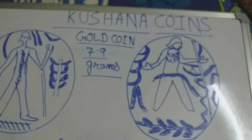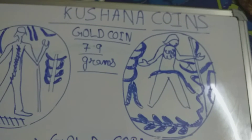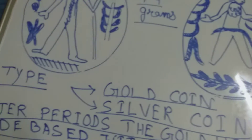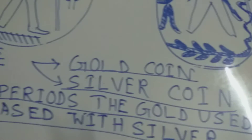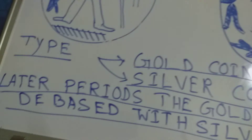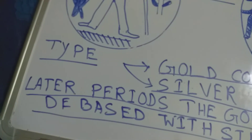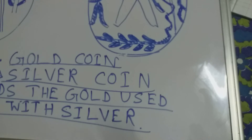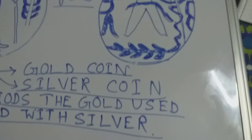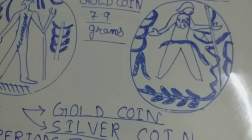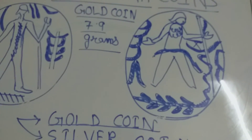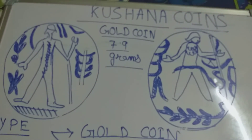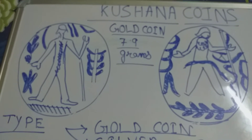So to summarize: gold coin weight is generally 7.9 to 9 grams, there are two types of coins — gold coin and silver coin — and in the later period they used gold mixed with silver in the coin. Keep watching, please subscribe to my channel.